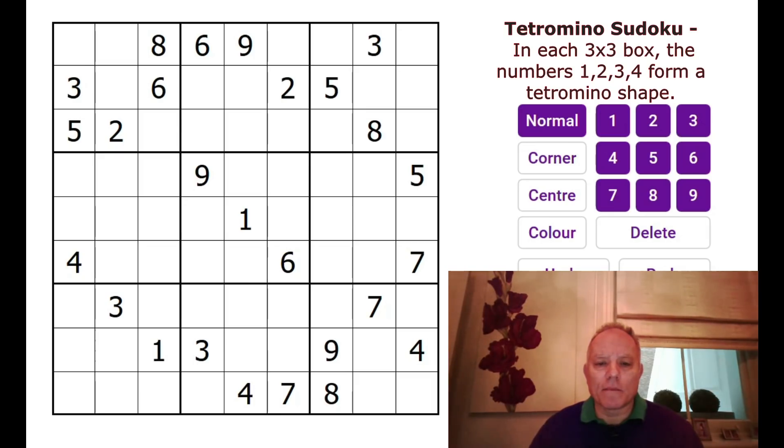It looks quite like a normal Sudoku, but it's not solvable without the extra rule, which is that the 1, 2, 3, and 4 in each 3x3 box are connected in a Tetromino shape. So they could be the L shape or the T shape or the O shape. They obviously can't be the I shape because that would sit outside the box. There's also the S shape. So one of those four shapes.